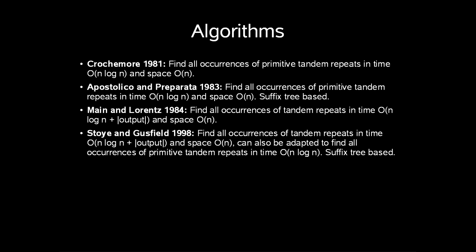We have already mentioned Crochemore, which in 1981 showed how to find occurrences in time O(n log n) and space linear. Two years later, Apostolico and Preparata made another approach which was based on the use of suffix trees and had the same running time.